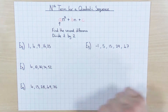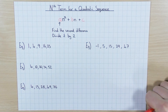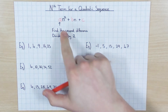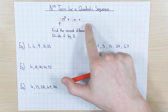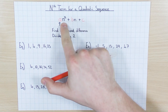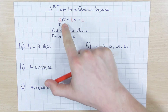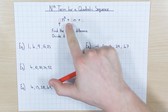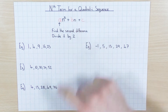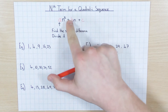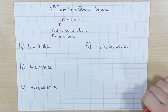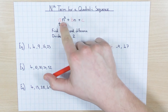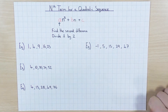We're going to have a look at how we work out the nth term rule of a quadratic sequence. The first thing we need to bear in mind is it's going to look something like this: we've got an n squared — that's what makes it quadratic — and then we're going to add something n and then plus something. We don't always have the last part, but we will always have the n squared, because that's what makes it quadratic.